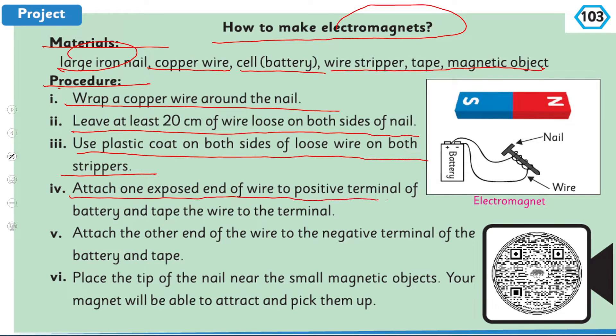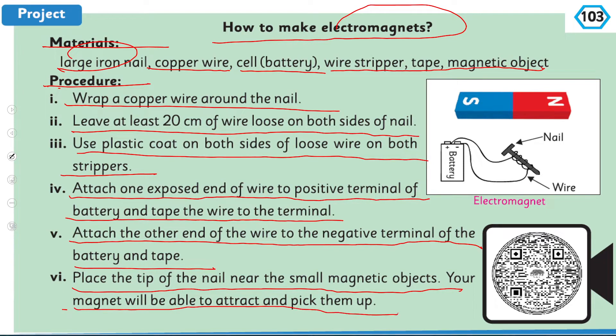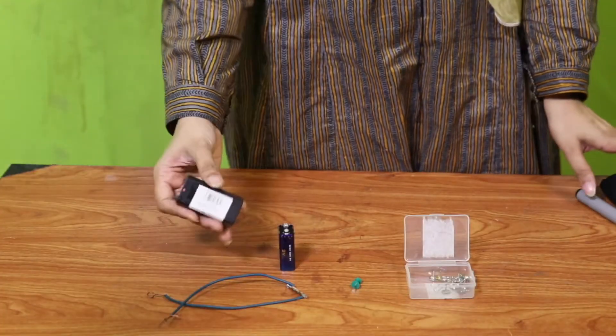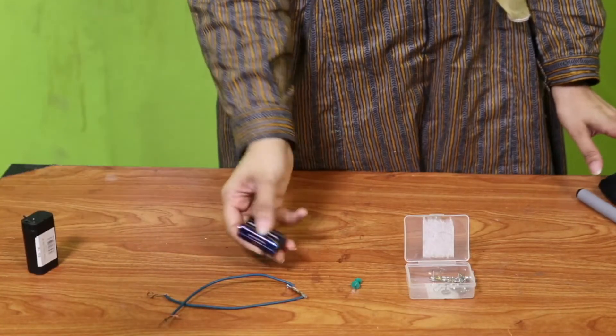exposed end of the wire to the positive terminal of the battery and tape the wire to the terminal. Attach the other end of the wire to the negative terminal of the battery and tape. Place the tip of the nail near the small magnetic object. Your magnet will be able to attract and pick them up. So my dear students, here I have batteries.